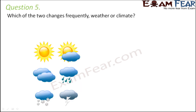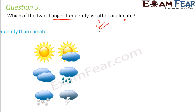Question number five: which of the two changes frequently — weather or climate? Weather is short-term and keeps changing on a daily basis. In fact, in the same day, the elements of weather such as temperature can change within a couple of hours, and rainfall can change too. Climate, on the other hand, is determined by looking at weather patterns over a long period of time. So definitely, weather changes more frequently than climate.